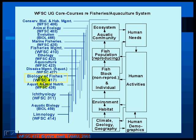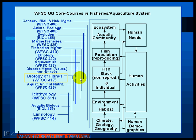Here's the place of Biology of Fishes in our overall undergraduate curriculum in the aquatic area. We've got about a dozen courses here. Four of these, including Biology of Fishes, are considered core: limnology, ichthyology, fisheries management, and biology of fishes. You can see the subject matter range of each course indicated by the vertical bar. My course spans from environment and habitat up to and including some population biology, but most of the emphasis is on the relationship between environment and the individual fish.